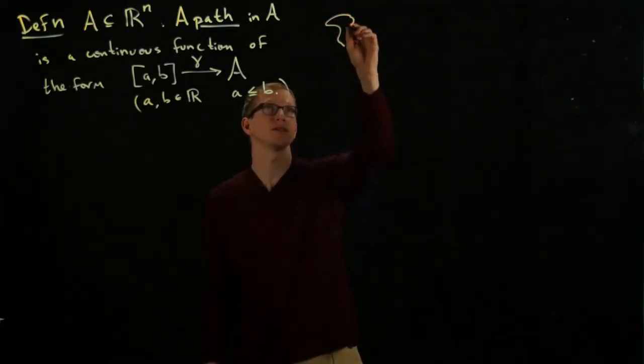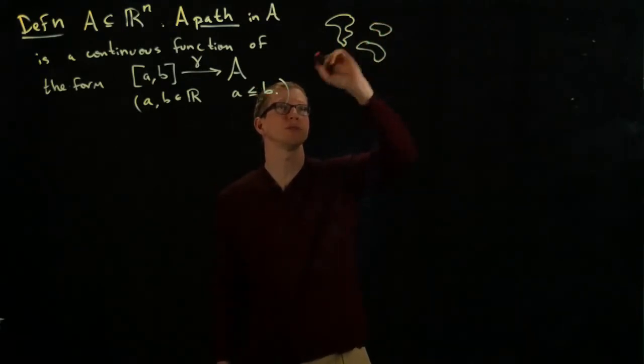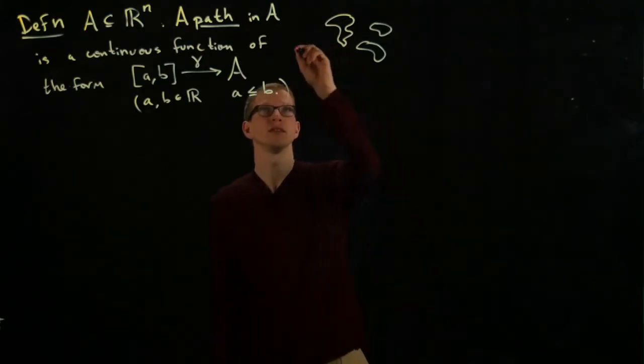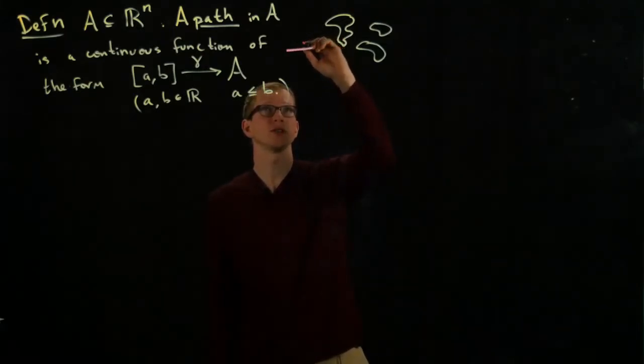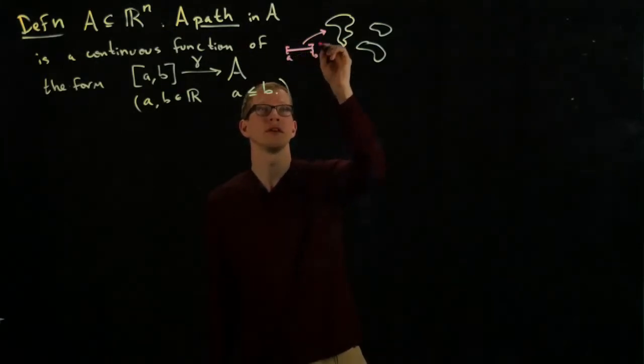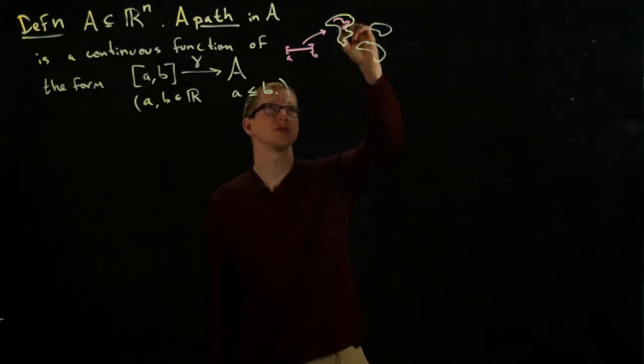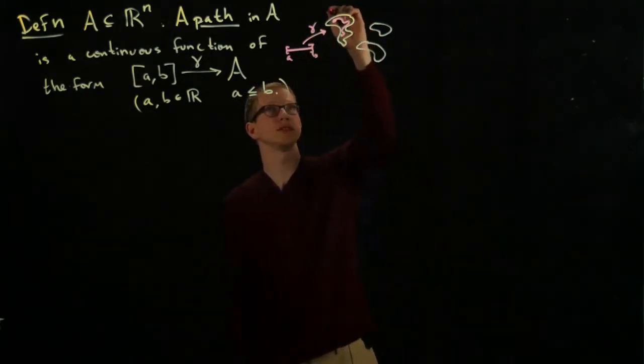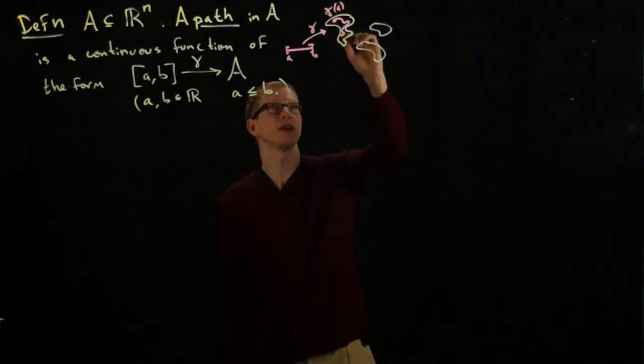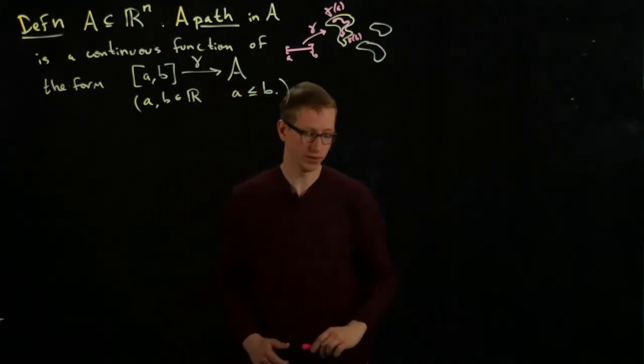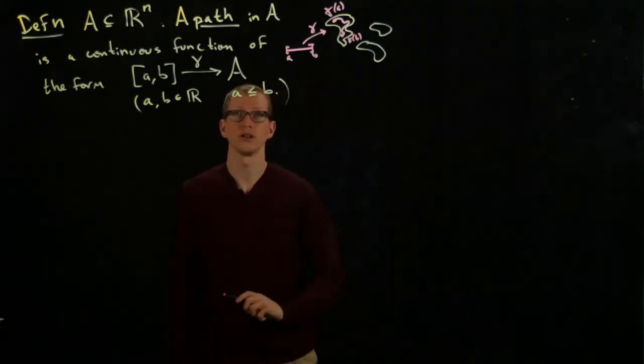Here's my subset A. Let's say A is some blob like this, maybe a bunch of blobs. Then a path in A is a continuous function. Here's my domain - it goes from A to B. And I can draw the image, something like this. Let's say this is gamma of A over here, and here is gamma of B. It's very important that we assume this function is continuous. Otherwise, we wouldn't call it a path.